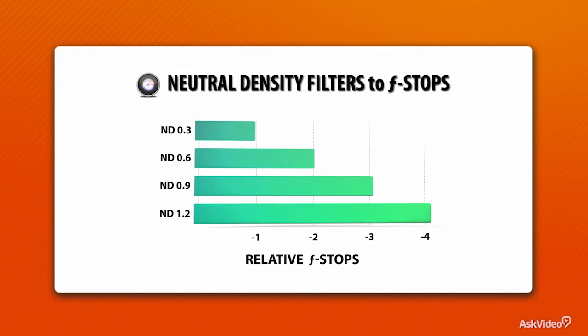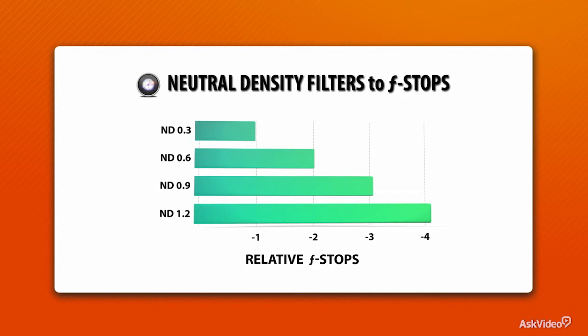An ND3 filter is equivalent to one f-stop. So if your lens was set to f/8 and you add an ND3, that would be the same as making your lens set to f/11. ND6 is equivalent to two f-stops. ND9 is equivalent to three f-stops — total madness. But again, the names and numbers aren't important. What's important is that you understand that you have options to limit how much light is coming into your camera lens, and that way you can make the image properly exposed no matter the circumstance.